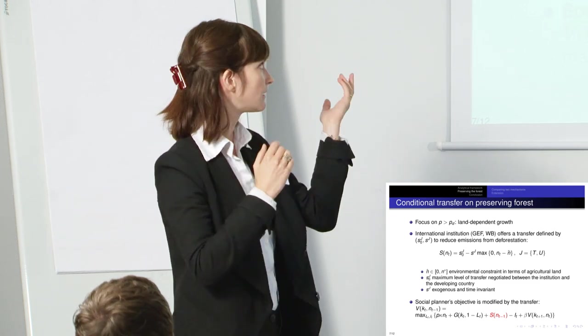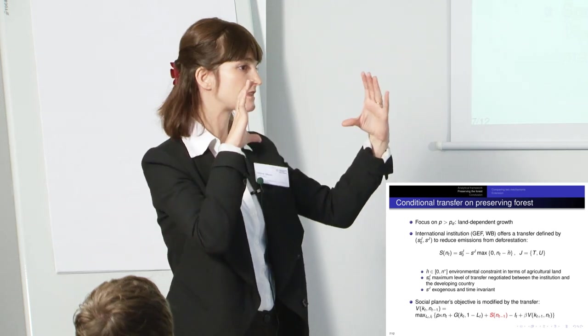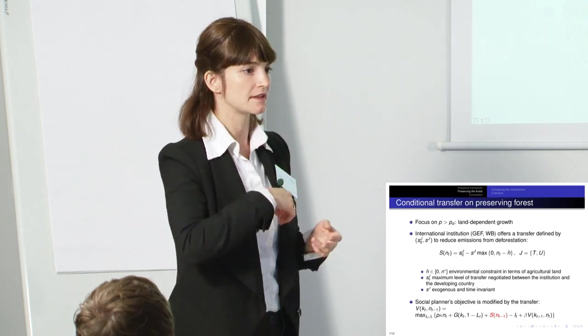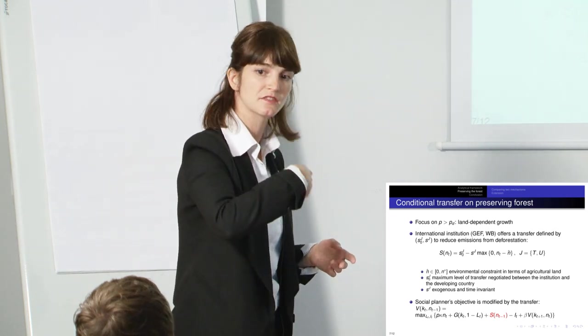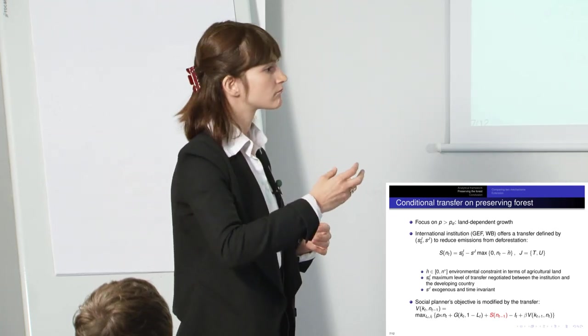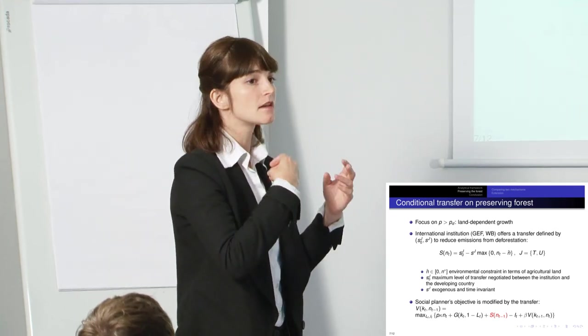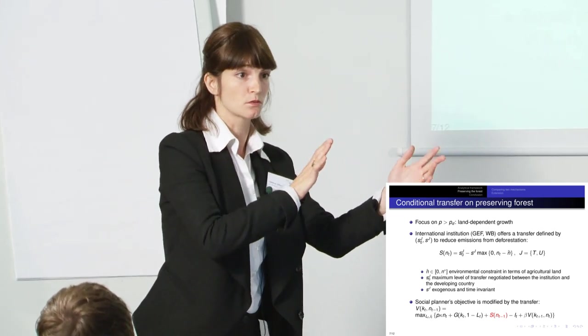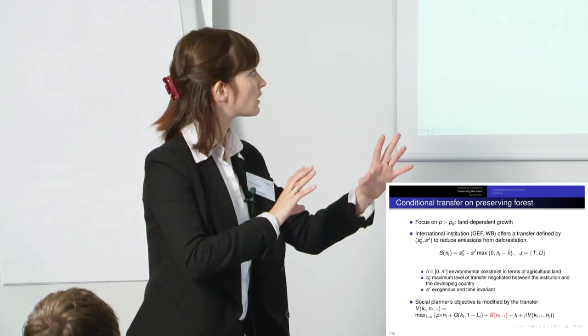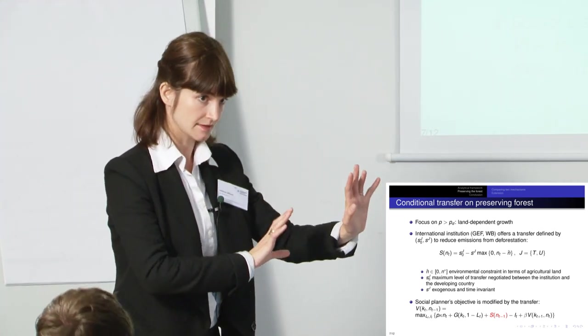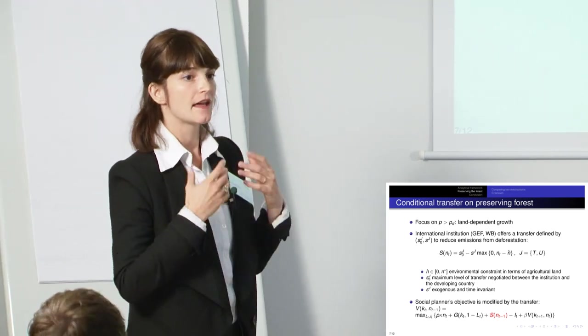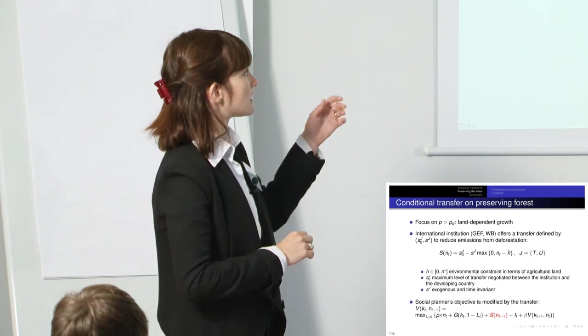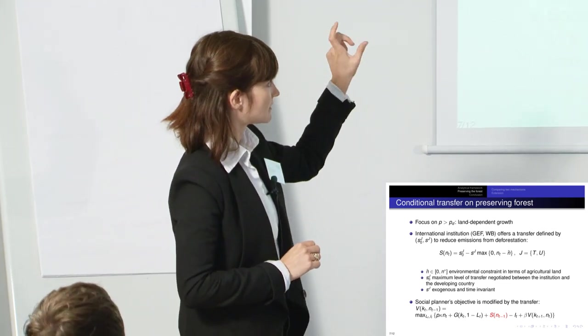And I will present two different ways to define this set of parameters SOG and SG. Either you consider that the economy is already in this process of specialization and you just consider at the steady state the extreme cases where all the population is already rural. So consider an economy where all the labor force is in the agricultural sector and think how can we save some forests in this context. So that's one way to define this set of parameters.